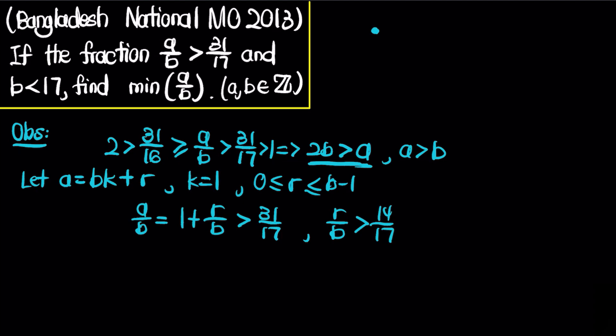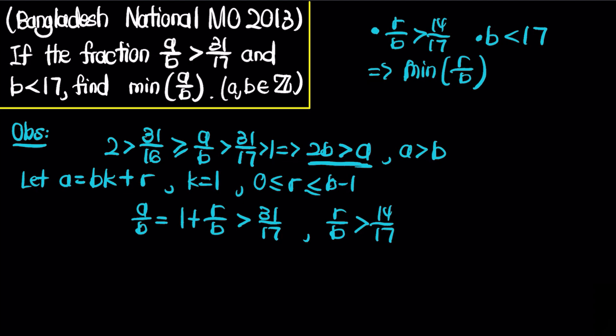So the problem reduces to two conditions: r over b is bigger than 14 over 17, and b is less than 17. We just have to find the minimum of r over b, which ultimately gives the minimum value of a over b. To achieve the minimum value of r over b, we need r as small as possible without violating the constraint. So we let r equal b minus x, where x is greater than or equal to 1 and less than or equal to b.